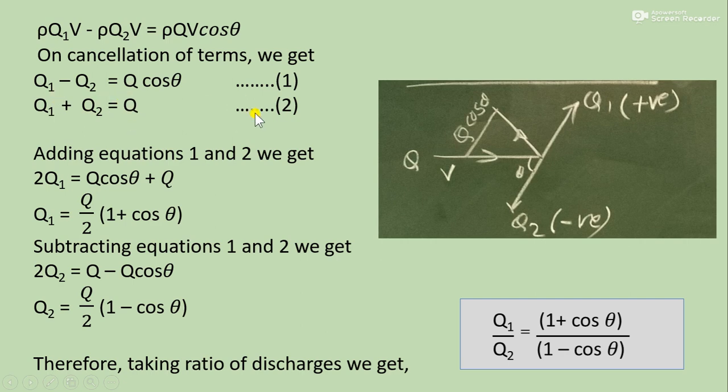Now adding these equations 1 and 2, we can get left side 2Q1, Q2 will get cancelled. Right side Q cos θ plus Q. So Q will be outside the bracket, and these two on the right side of the equation. That is why Q1 equals Q/2(1 + cos θ).